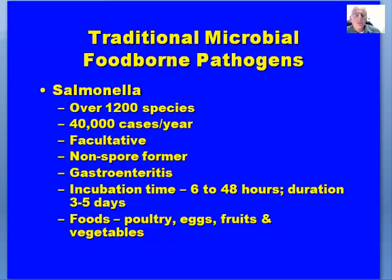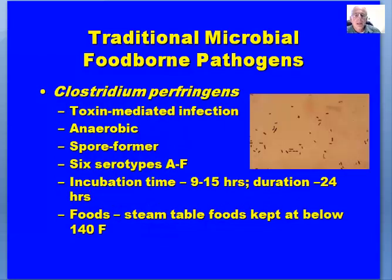The major foods associated with Salmonella are poultry and eggs, but more recently we've seen a lot of cases of Salmonella associated with fruits and vegetables — a number of recalls certainly over the last year or two related to fruits, vegetables, and also nuts.